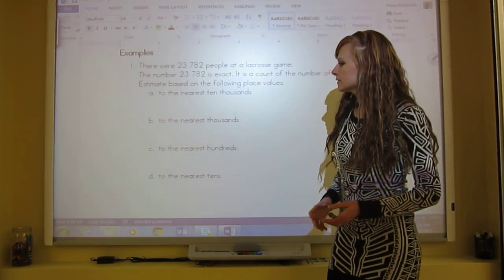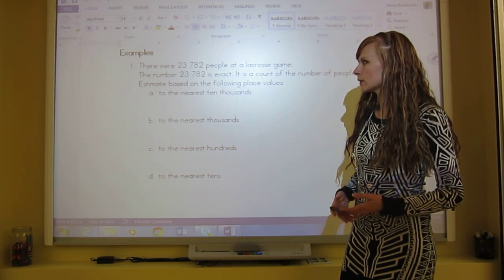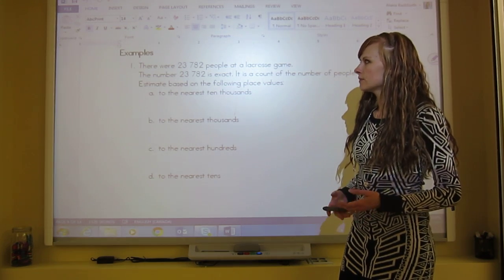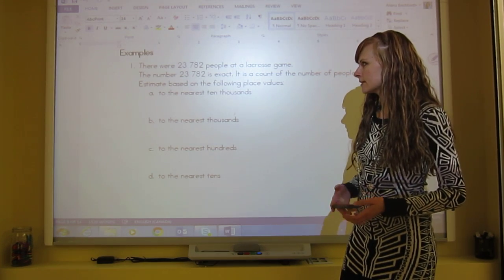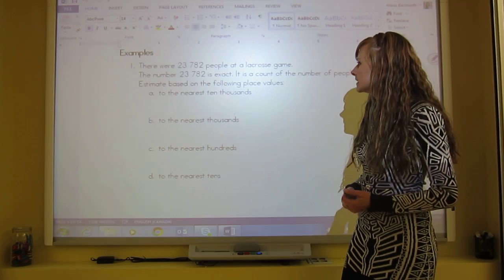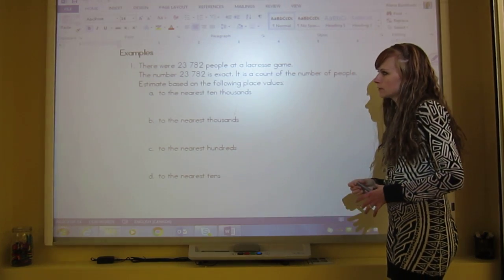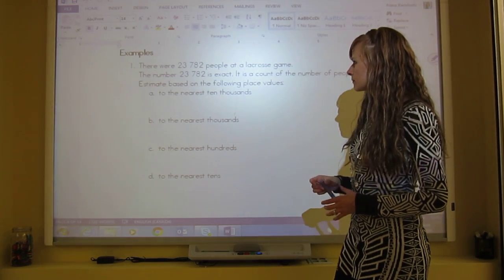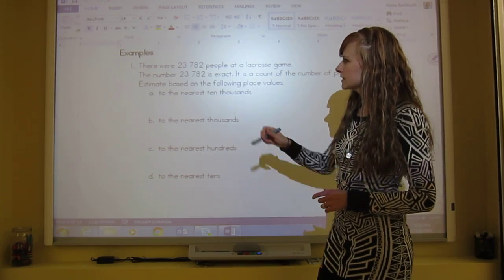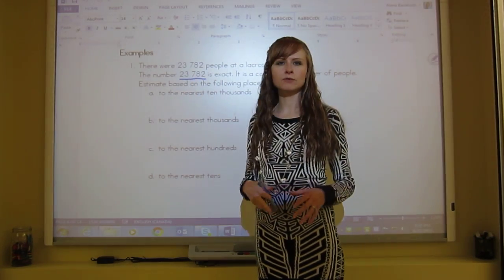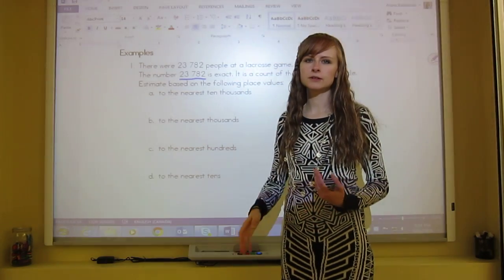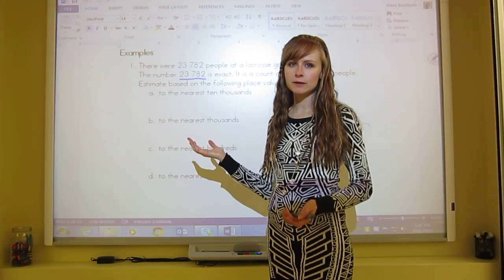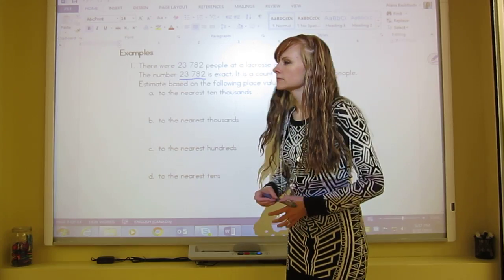So, let's do the example here. It says there were 23,782 people at a lacrosse game. The number 23,782 is exact. It is a count of the number of people. Estimate based on the following place values. So we just need to round this based on different place values. We can do the first one together, and then I'll do the rest with you. Unless you want to do that one by yourself too, then pause now.